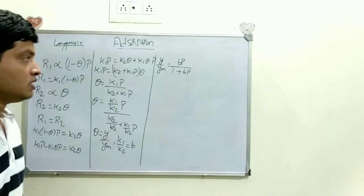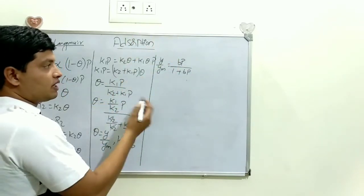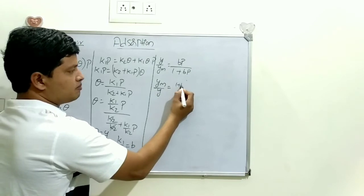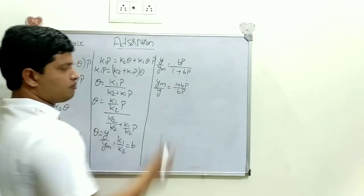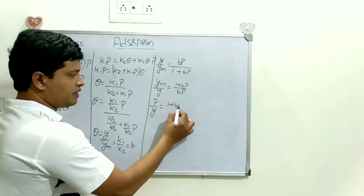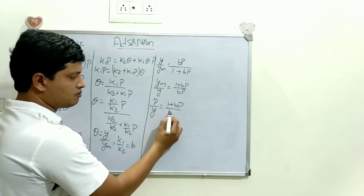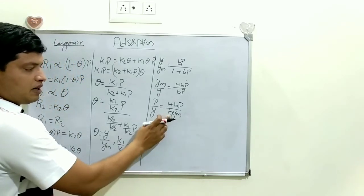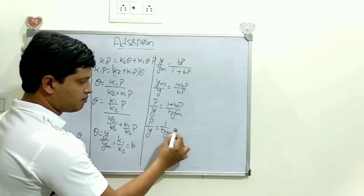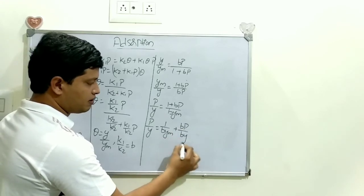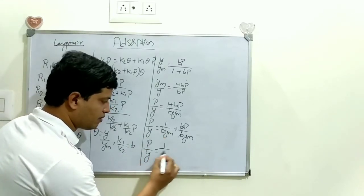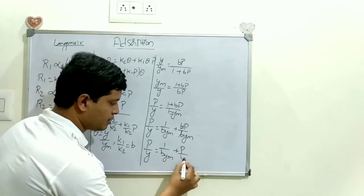To get pressure on the x-axis and amount of gas adsorbed on the y-axis, we rearrange the equation. Inverting both sides: ym/y = (1 + bP) / bP. Taking pressure to one side: P/y = (1 + bP) / (b·ym). Expanding and cancelling common terms, the resultant Langmuir equation is: P/y = 1/(b·ym) + P/ym.